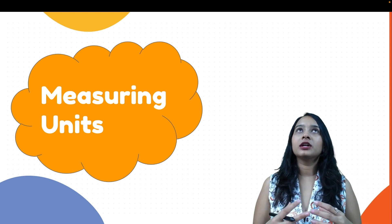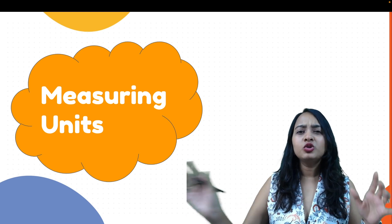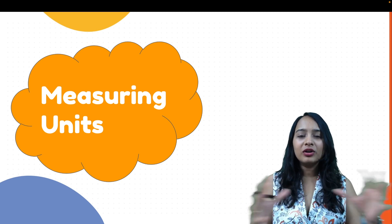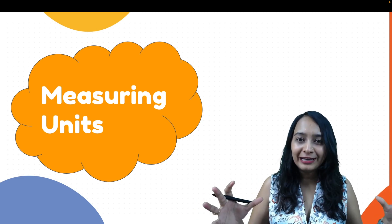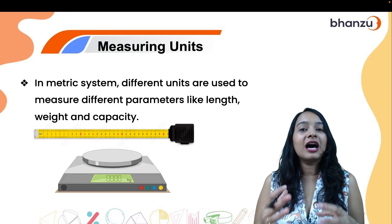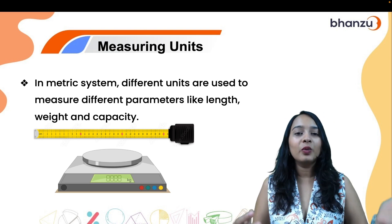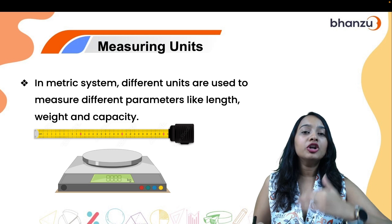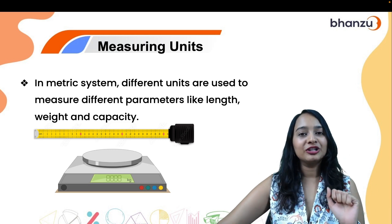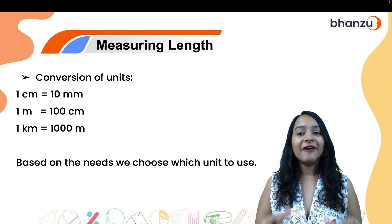If I ask you to measure your height, your weight, or the amount of water in a bottle — do all of these use the same unit of measurement? No, right? In the metric system, different units are used to measure different parameters like length, weight, and capacity.